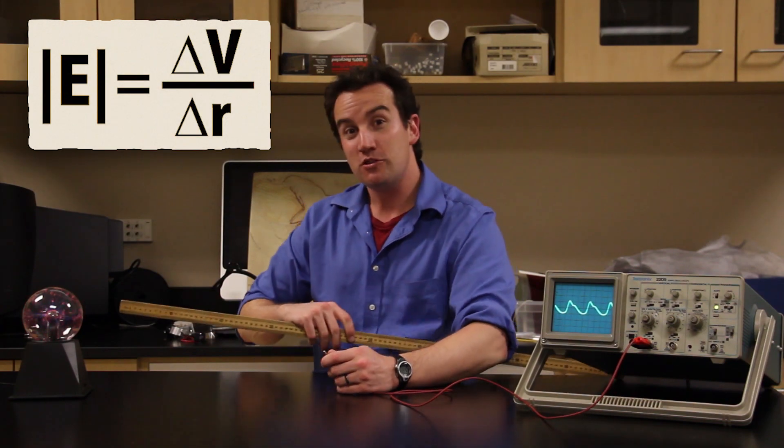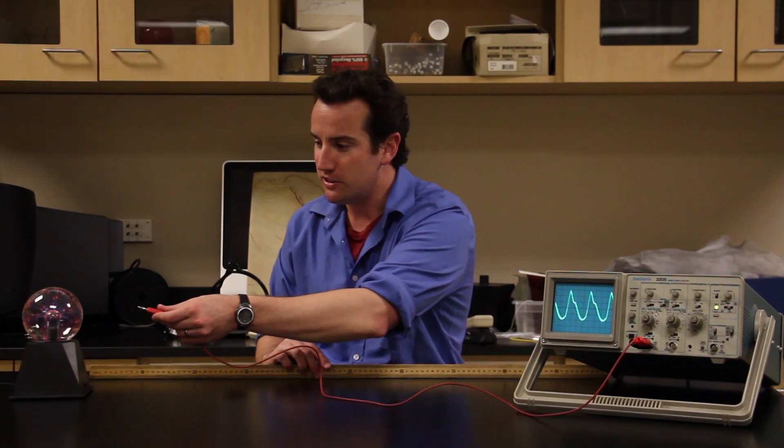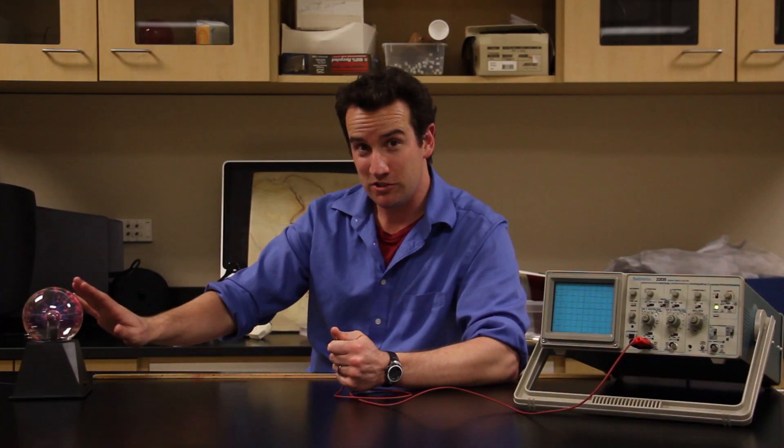Now, you can use the change in voltage over change in distance formula, and make direct measurements on an electric field. But be careful, because your body can act as an antenna, and will interfere with the results.